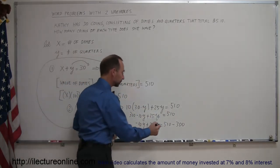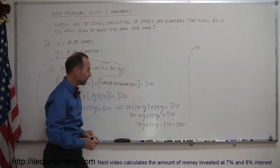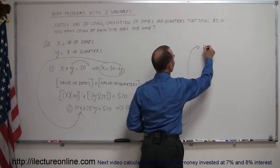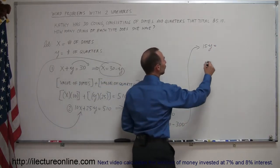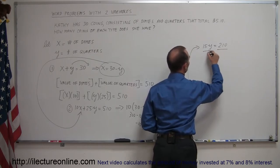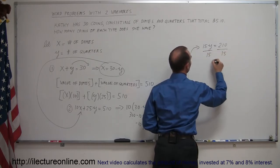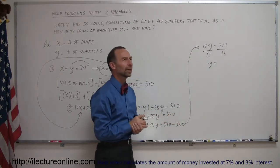Combined like terms, so let's move over here. We have the minus 10y plus 25y, that's 15y on the left side, equals 510 minus 300, which is 210 on the right side. So now we divide both sides of the equation by 15.